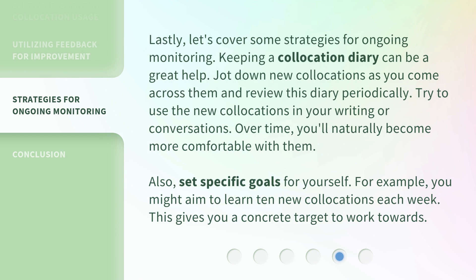Lastly, let's cover some strategies for ongoing monitoring. Keeping a collocation diary can be a great help. Jot down new collocations as you come across them and review this diary periodically. Try to use the new collocations in your writing or conversations. Over time, you'll naturally become more comfortable with them. Also, set specific goals for yourself — for example, you might aim to learn 10 new collocations each week. This gives you a concrete target to work towards.